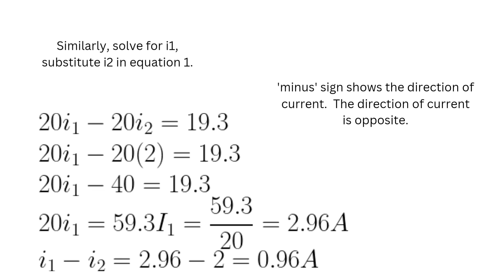And I1 minus I2 is equal to 0.96 and this is the current going through diode.